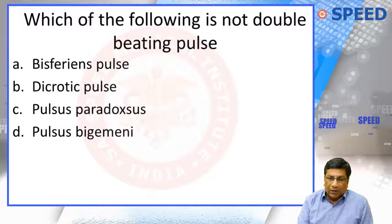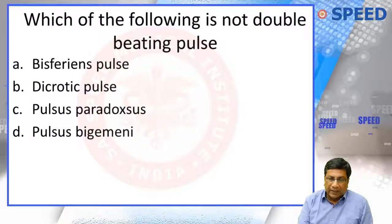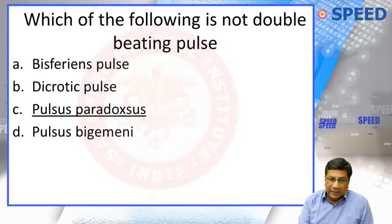Which of the following is not a double beating pulse? Bisferiens pulse is double beating, dicrotic pulse is double beating, and pulsus bigeminy is double beating. Pulsus paradoxus is only a change in volume of the pulse and is not a double beating pulse.